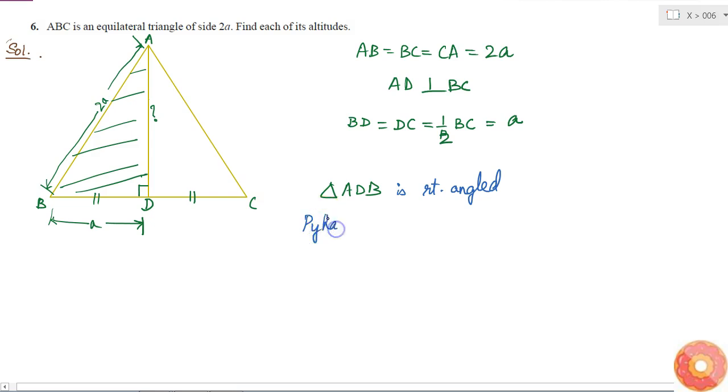So if I apply the Pythagoras theorem, then what will I get? Hypotenuse square is equal to sum of the squares of other two sides. So what is the hypotenuse? Hypotenuse is that side which is opposite to the right angle. The right angle is here, so opposite to the right angle is this one.